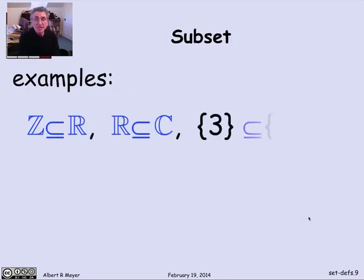Some examples of the subset relation are that the integers are a kind of special case of a real number. So the set of integers is a subset of the real numbers. A real number is a special case of a complex number, so the real numbers are a subset of the complex numbers. And here's a concrete example where I have a set of three things, 5, 7, and 3. This is the set with just the element 3 in it. We're sometimes sloppy about distinguishing the element 3 from the set consisting of just 3 as its only element. But in fact, it's a pretty important distinction to keep track of.